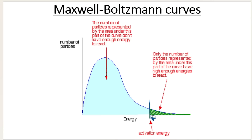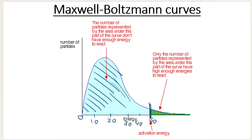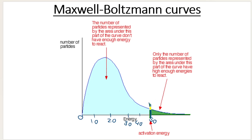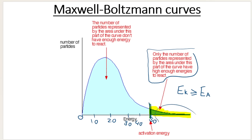Back to the Maxwell-Boltzmann distribution curve. Let's say the activation energy is 50 joules. All of these particles — remember the area under the curve represents the number of particles — all of these particles do not have enough energy equal to or greater than the activation energy, so no effective collisions will take place. Only the particles represented by the area under the right-hand part of the graph, where kinetic energy is equal to or greater than the activation energy, will react.